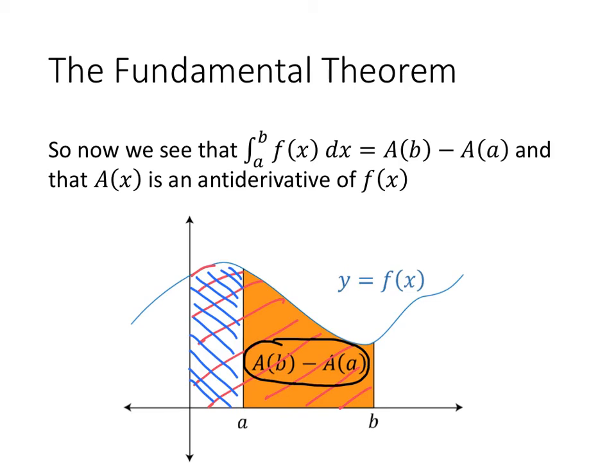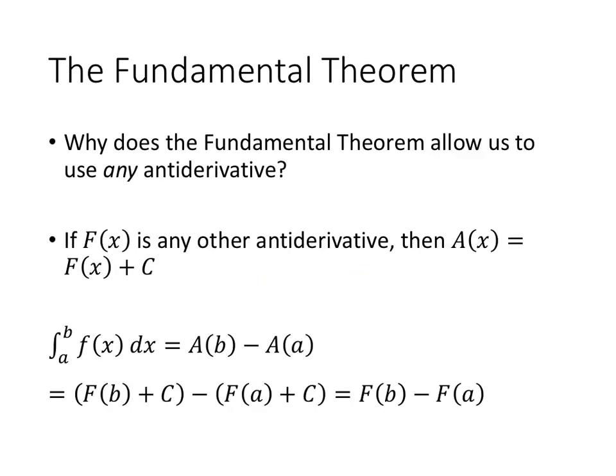So it looks like we're done here because this is essentially what the fundamental theorem says. It says that the integral from a to b is equal to an antiderivative with b plugged in, a plugged in, and then subtracted. But the fundamental theorem tells us that we can use whichever antiderivative we want. So why is that true? Why could we use any other antiderivative instead of just the specific area function?